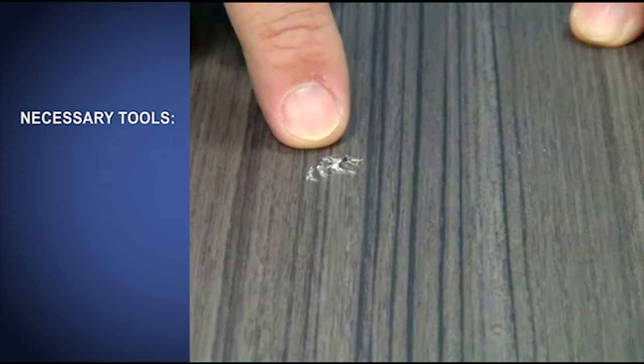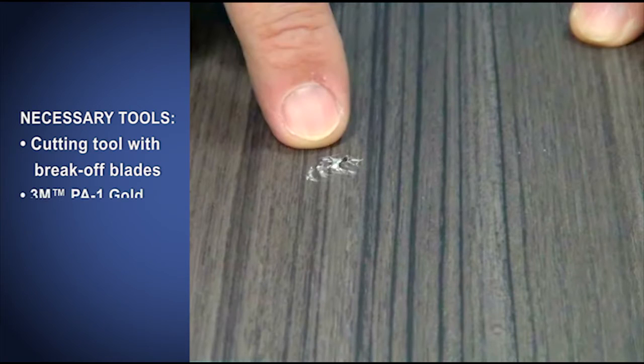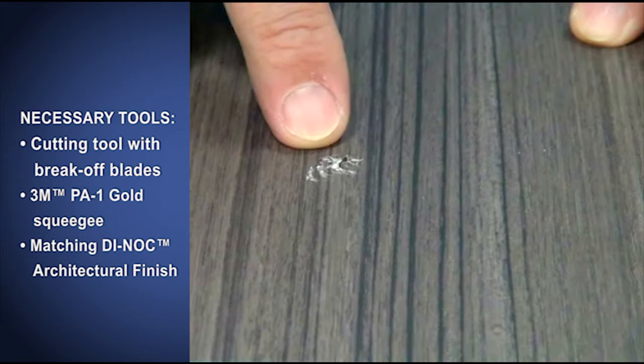You will need these tools: a cutting tool with break-off blades, a 3M brand applicator PA-1 gold squeegee that is clean and nick-free, and the Di-Noc brand architectural finish that matches the damaged area.